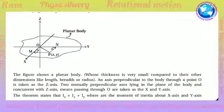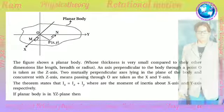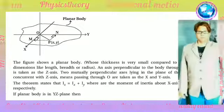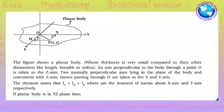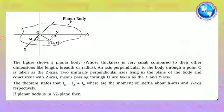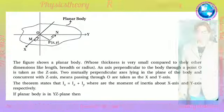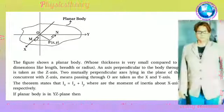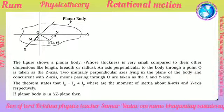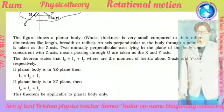The figure shows a planar body whose thickness is very small compared to its other dimensions like length, breadth, or radius. An axis perpendicular to the body through point O is taken as the z-axis. Two mutually perpendicular axes lying in the plane of the body and concurrent with the z-axis (passing through O) are taken as the x and y axes. The theorem states that Iz = Ix + Iy, where Ix and Iy are the moments of inertia about the x and y axes respectively.